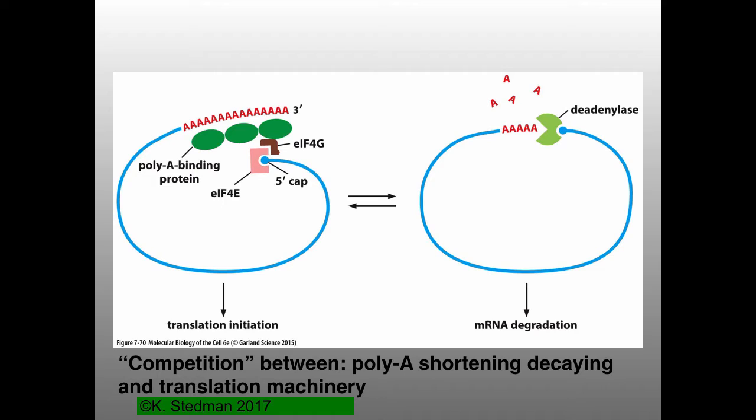So how does this poly-A tail chewback or degradation happen? It's a process by which an enzyme called deadenylase associates with the 5-prime cap. There's a competition between your translation factors and the enzymes that chew back the poly-A tail. In the cell, basically, you have competition between the poly-A shortening enzyme and the translation machinery.